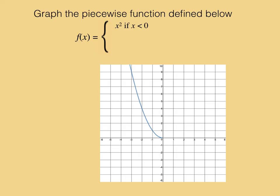f of x equals 2 if x equals 0. So all that is is an ordered pair at 0, 2.